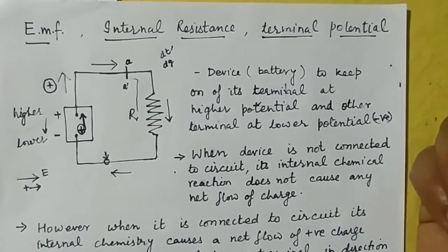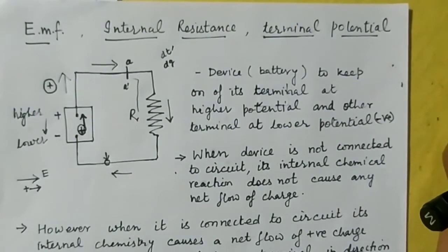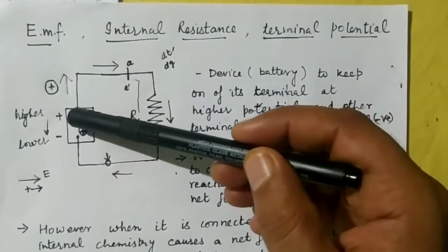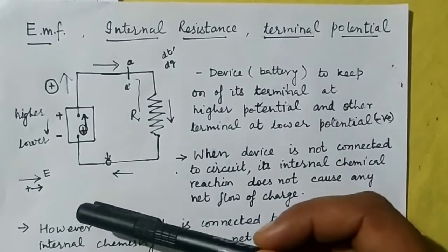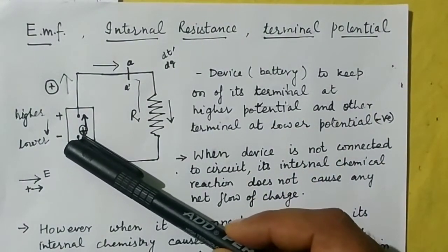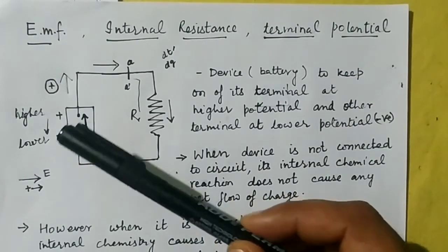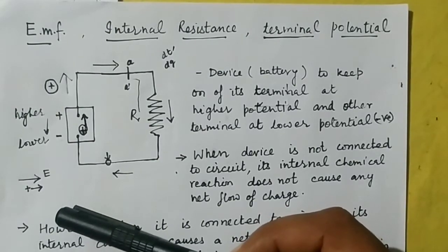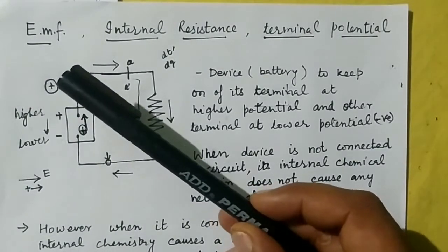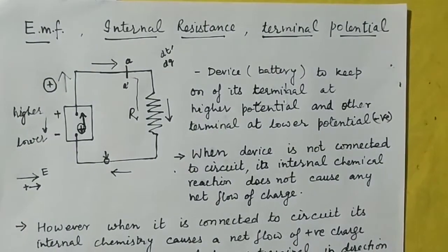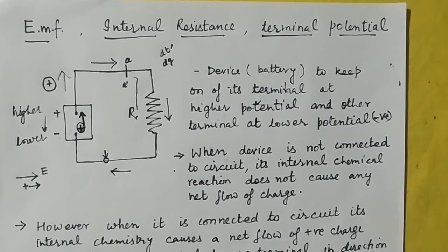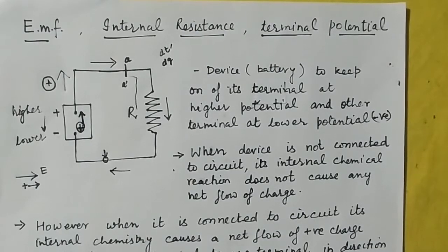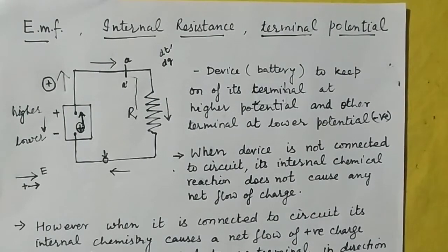Now we are going to define the first term: electromotive force. The force supplied by the chemical energy inside the cell — which was causing the positive charge to move from the negative plate to the positive plate — is known as electromotive force. One important point: EMF is not actually a force; it is a potential. Since it is forcing the positive charge to move, we call it a 'force,' but otherwise it is a potential — its dimension is that of potential.